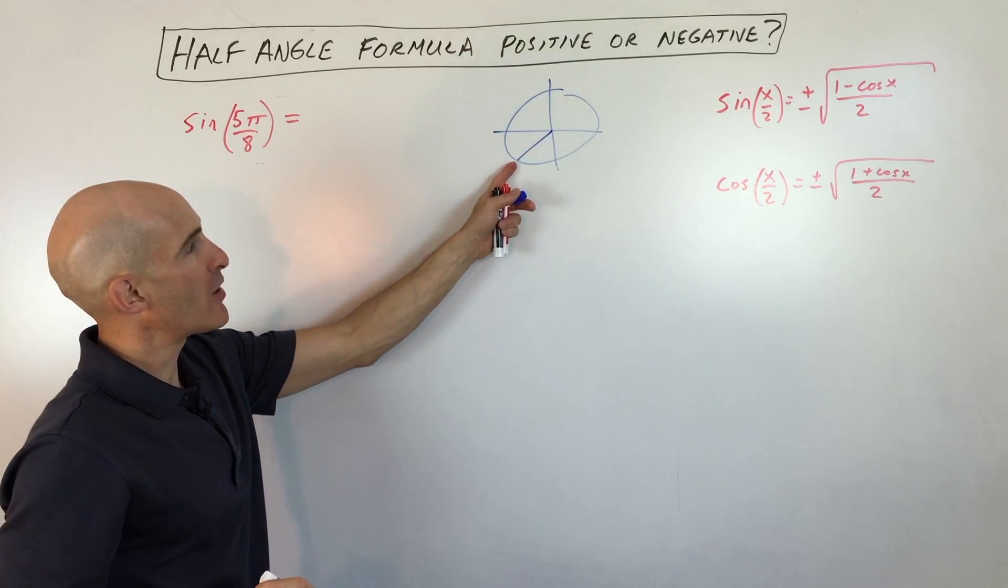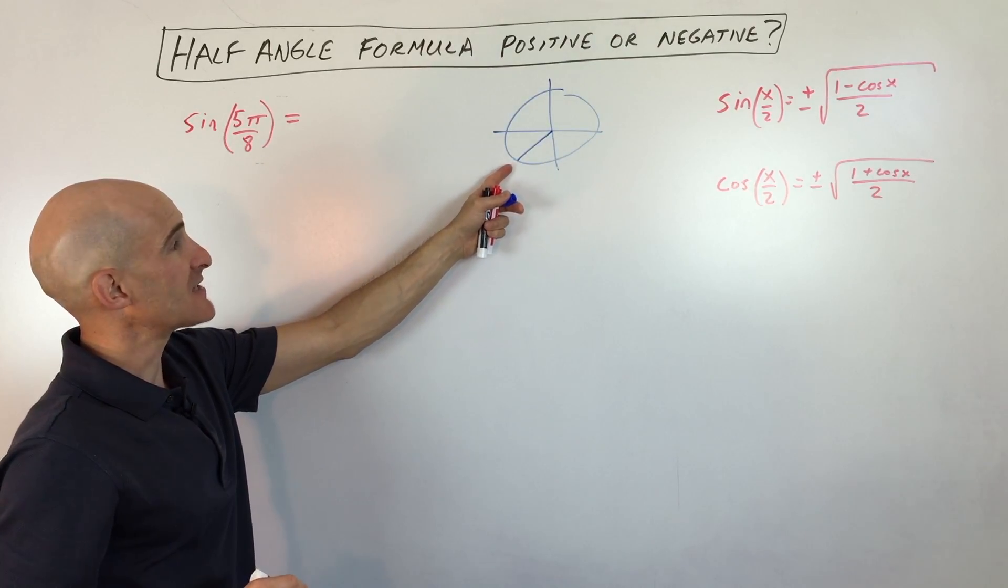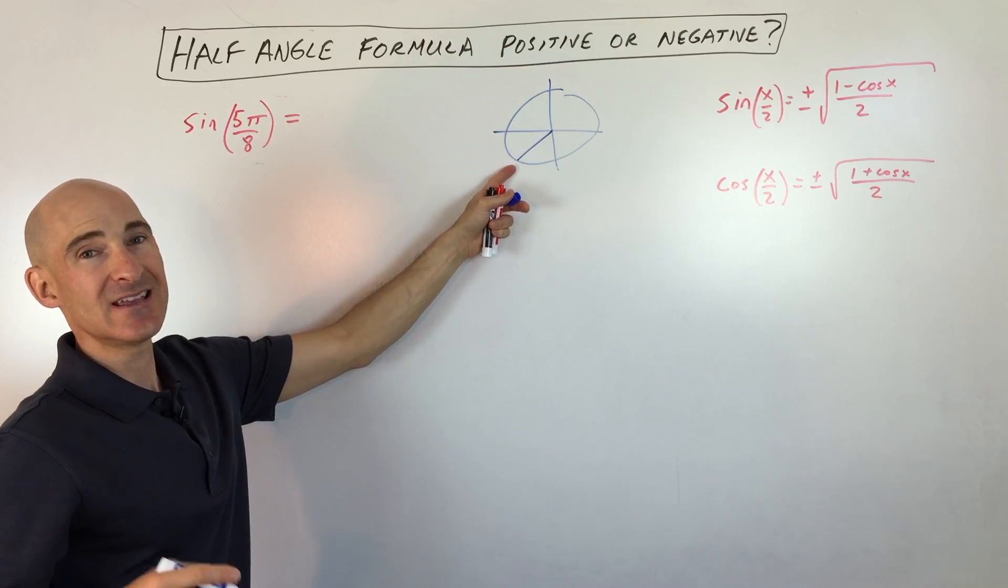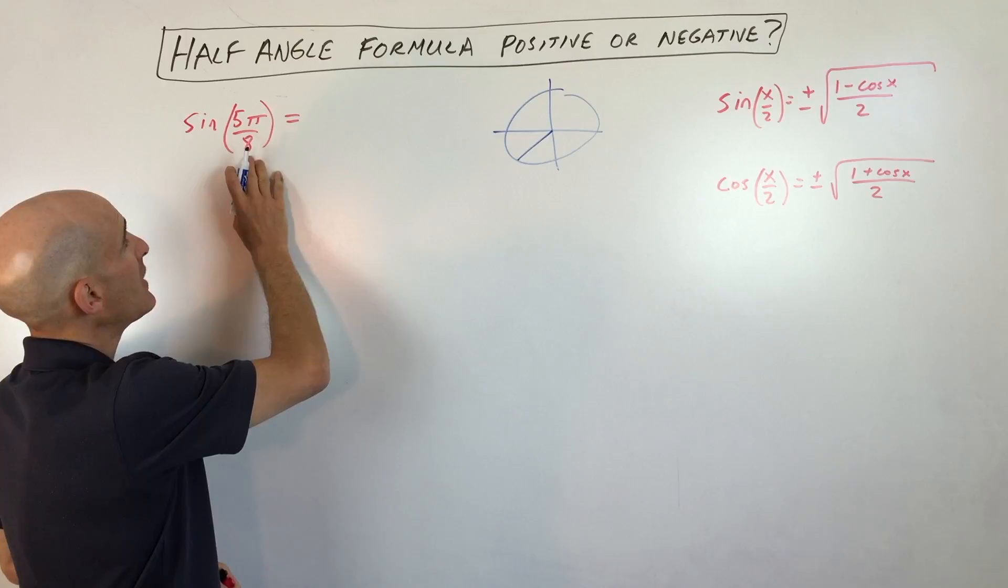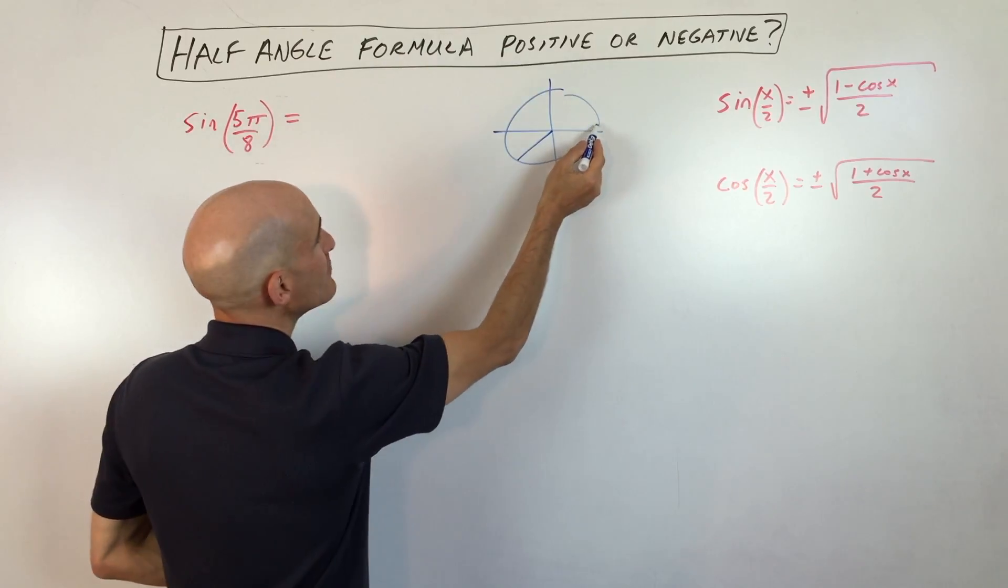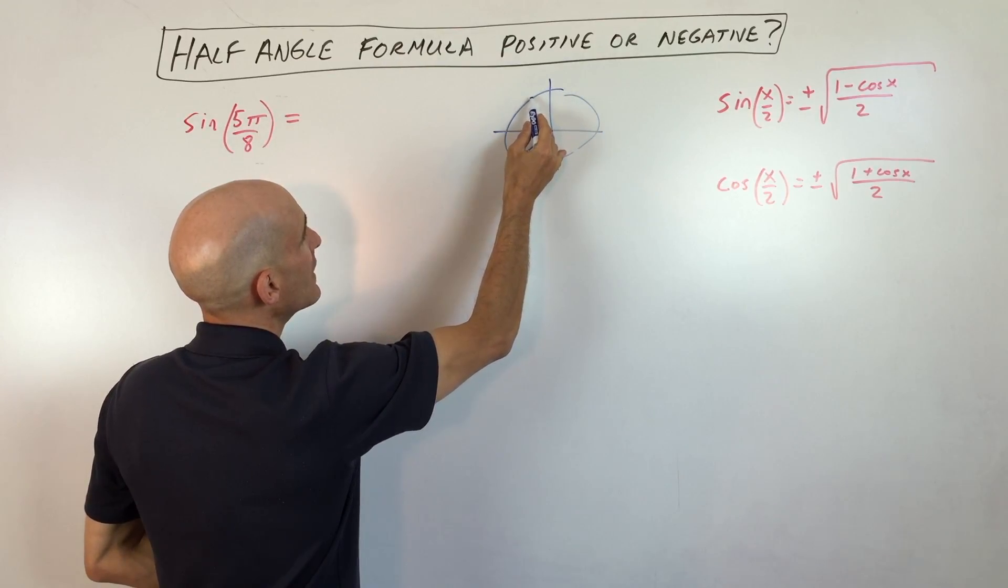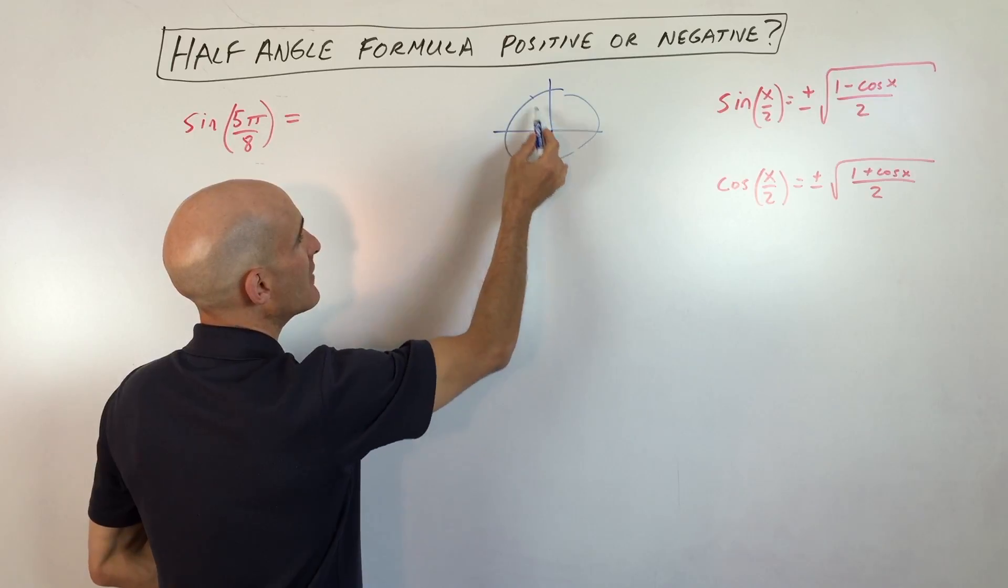And when you look at this point right here, we know that the sine in the third quadrant is negative. But 5π/8, this is 5 eighths π. 5 eighths π is going to put you right about over here, in the second quadrant.